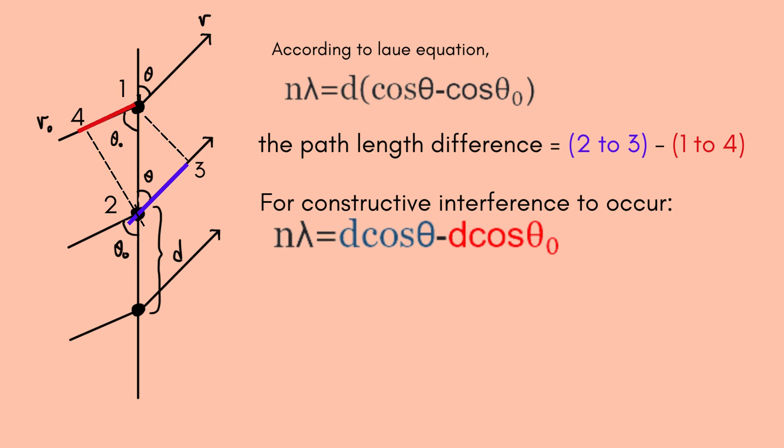If we know theta naught, that is we can control the angle that the incoming rays make with the crystal, we could then solve the equation for the angle theta that could lead to constructive interference.